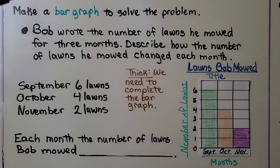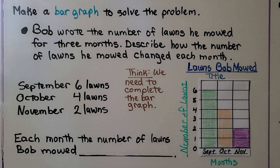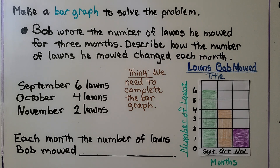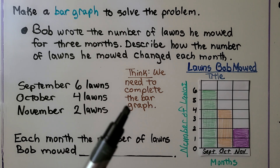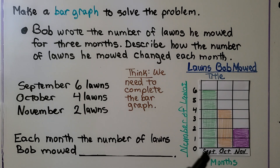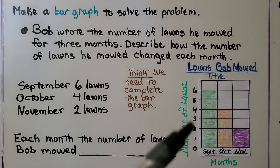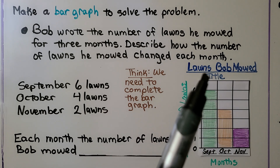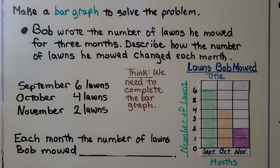Again, it's telling us to make a bar graph to solve the problem. The problem reads: Bob wrote the number of lawns he mowed for 3 months. Describe how the number of lawns he mowed changed each month. We need to complete a bar graph. I have September, October, and November labeled as the months, with the scale labeled 'number of lawns.' The title is 'Lawns Bob Mowed.'